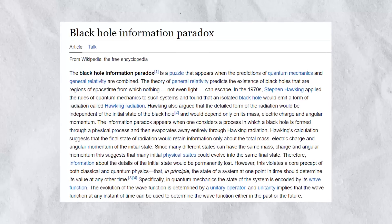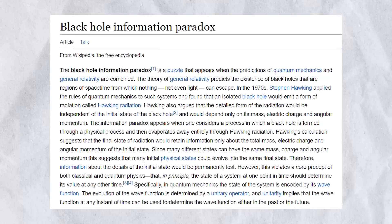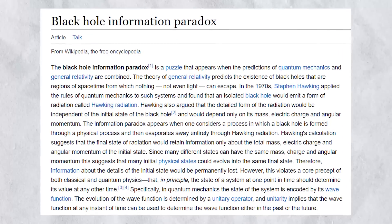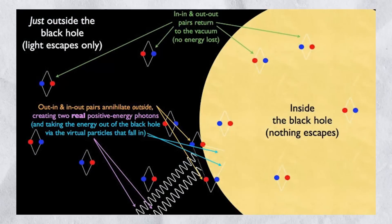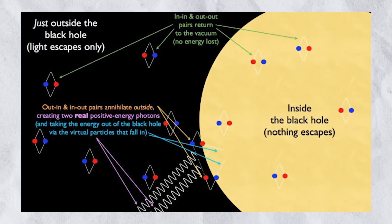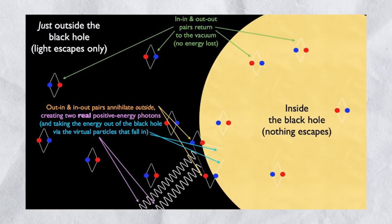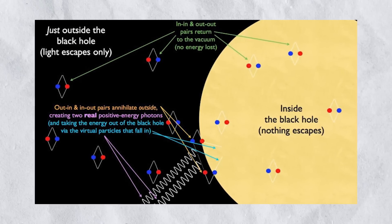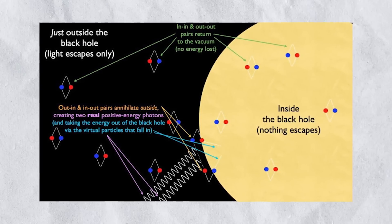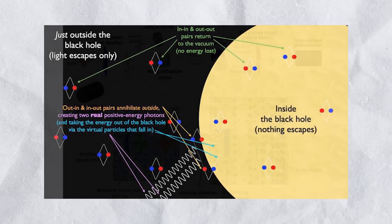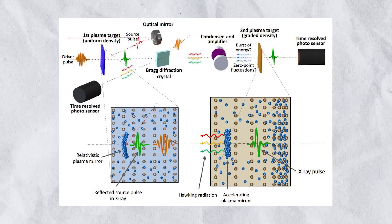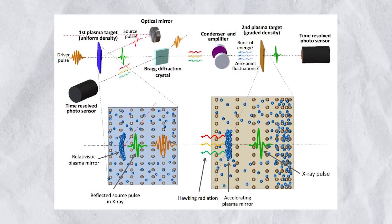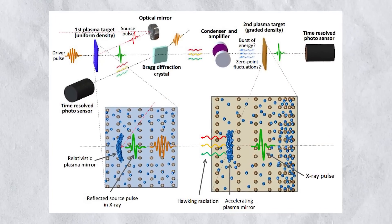The idea that information can be lost forever in a black hole is known as the black hole information paradox. This paradox arises from the fact that according to classical general relativity, once an object falls into a black hole, it is trapped behind the event horizon and cannot escape. As a result, any information about the object, such as its mass, charge or angular momentum, should also be trapped behind the event horizon and inaccessible to the outside world.